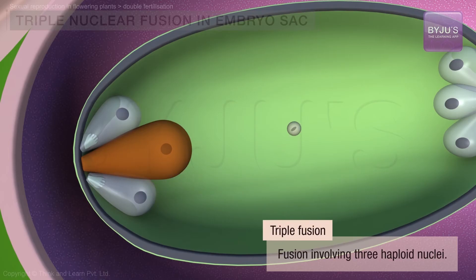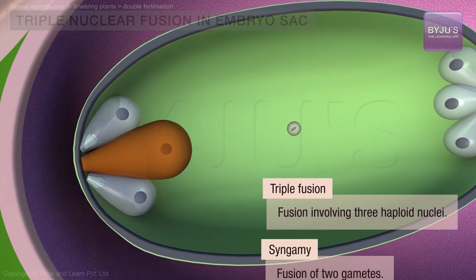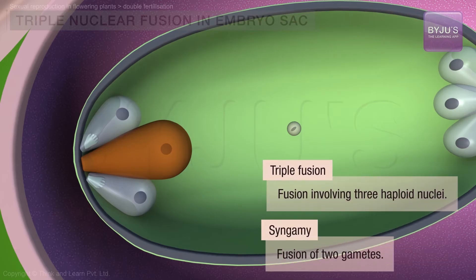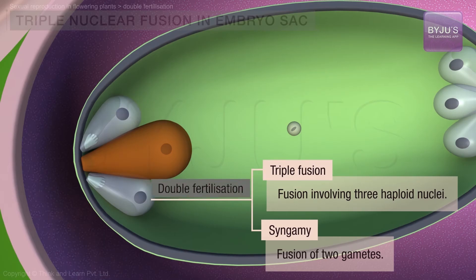These more or less simultaneous events — that is, syngamy and triple fusion — are collectively termed double fertilization. And they are a hallmark of angiosperm reproduction.